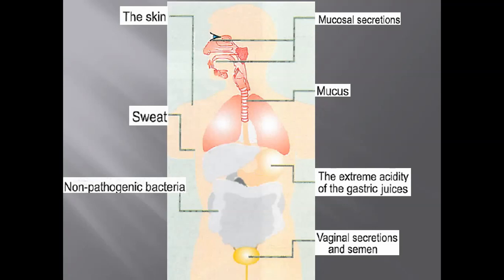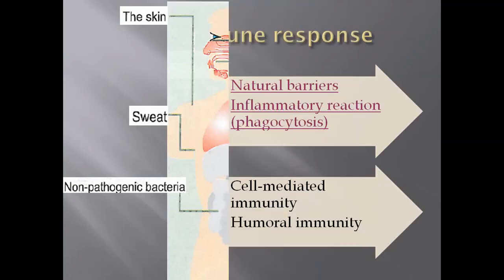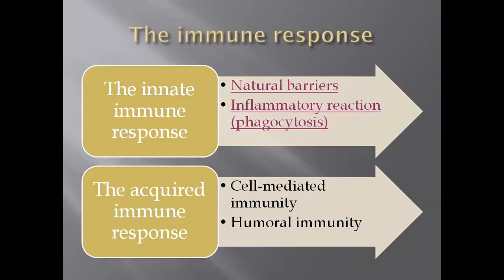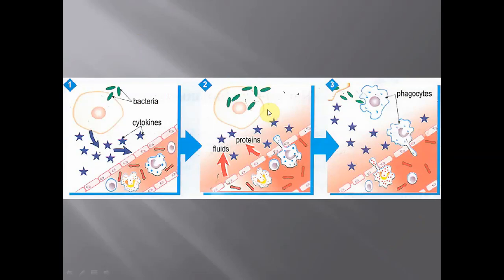So what happens if we get infected by a certain pathogen? Here comes the second stage of the innate immune response, also called the non-specific immune response — and it is called the inflammatory reaction. What is the inflammatory reaction, what are its signs, and what happens in this reaction?